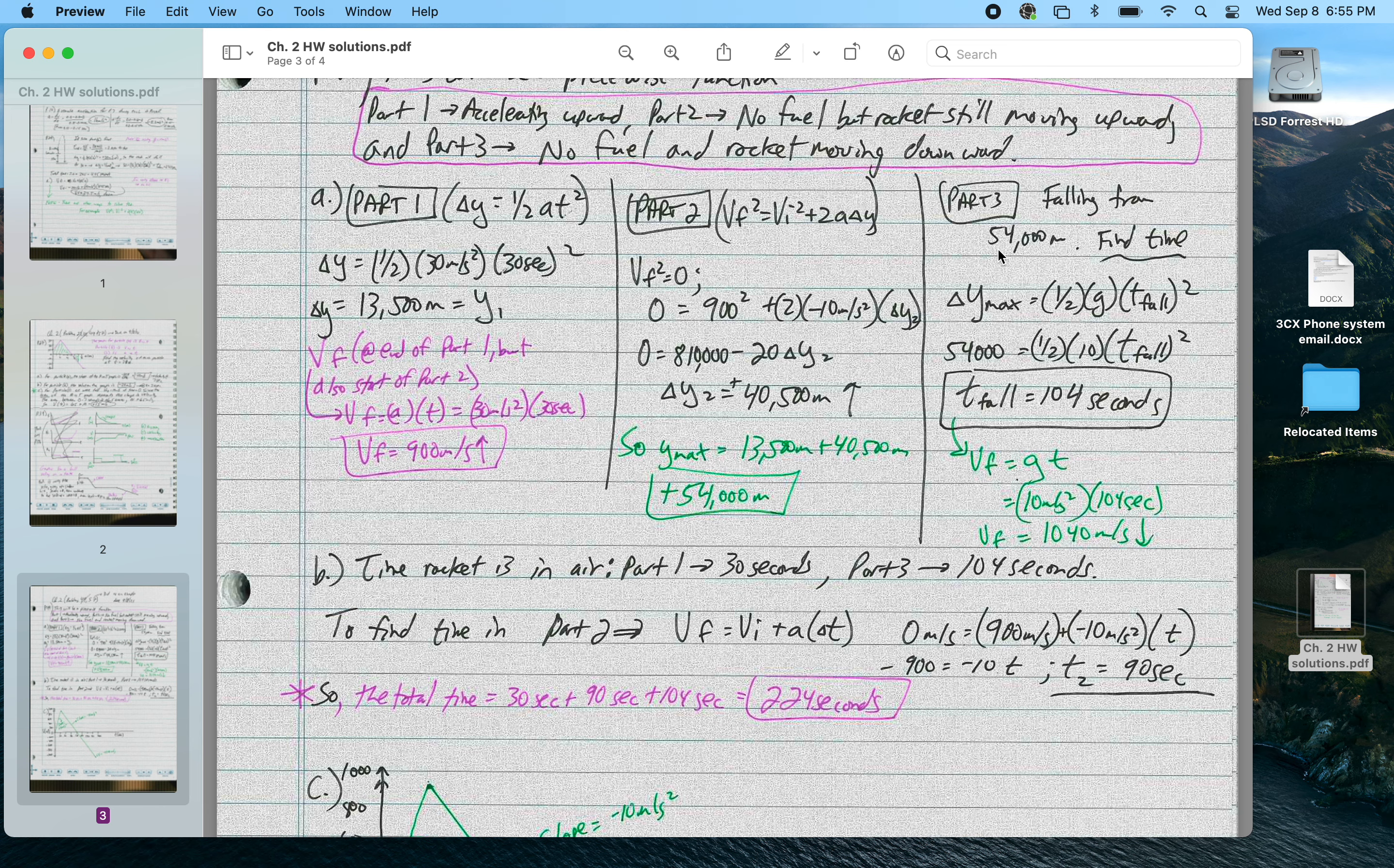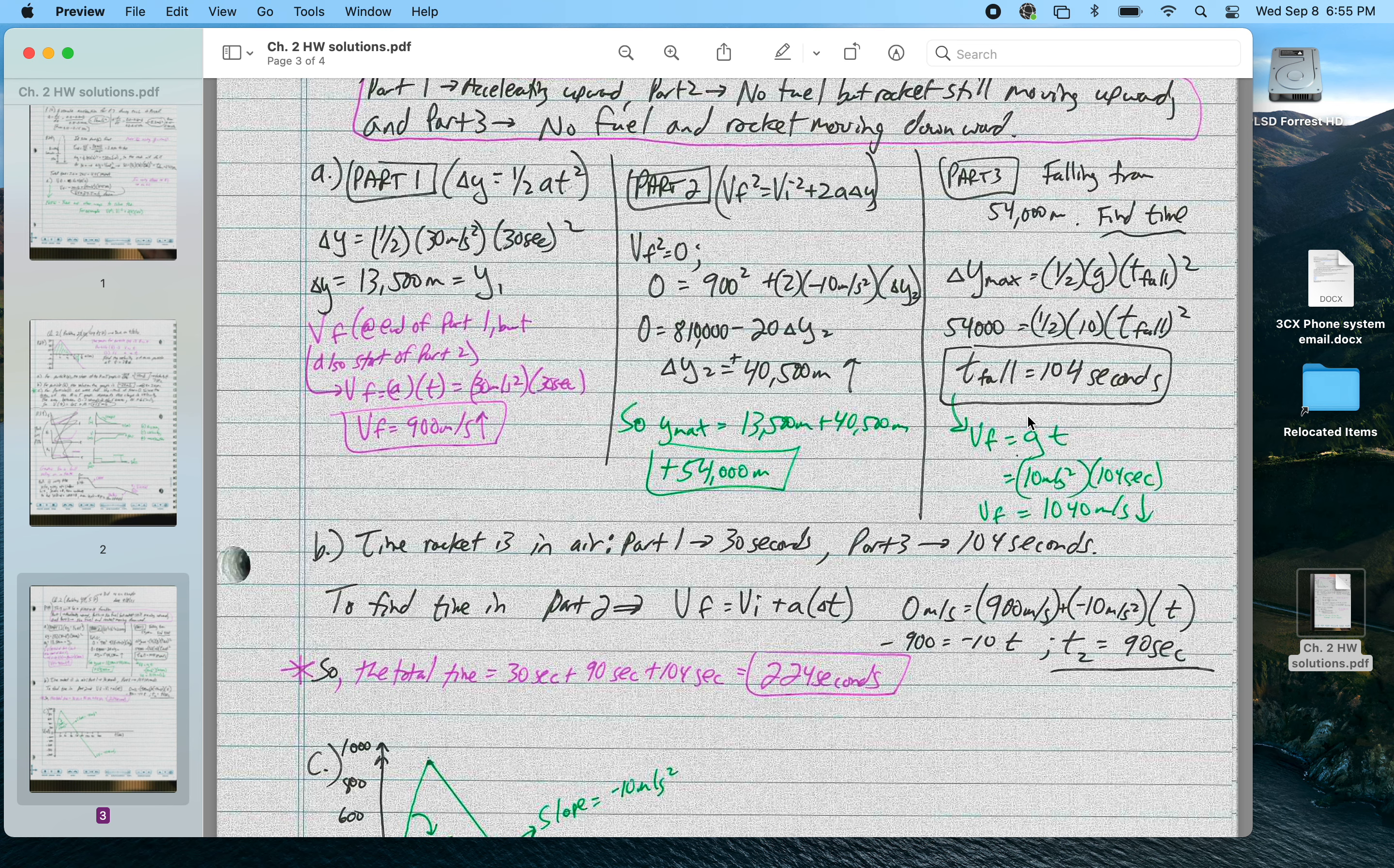For part 3, I'm going to be falling down from 54,000 meters, so I can use this delta y is equal to one half at squared or something similar to that. And I find out that the time to fall is 104 seconds. So I can use that also to find the final velocity right as this thing hits the ground. I know the time here, 104 seconds, I know the time here is 30 seconds, so to find the total time of the trip, I need to figure out the time for part b.